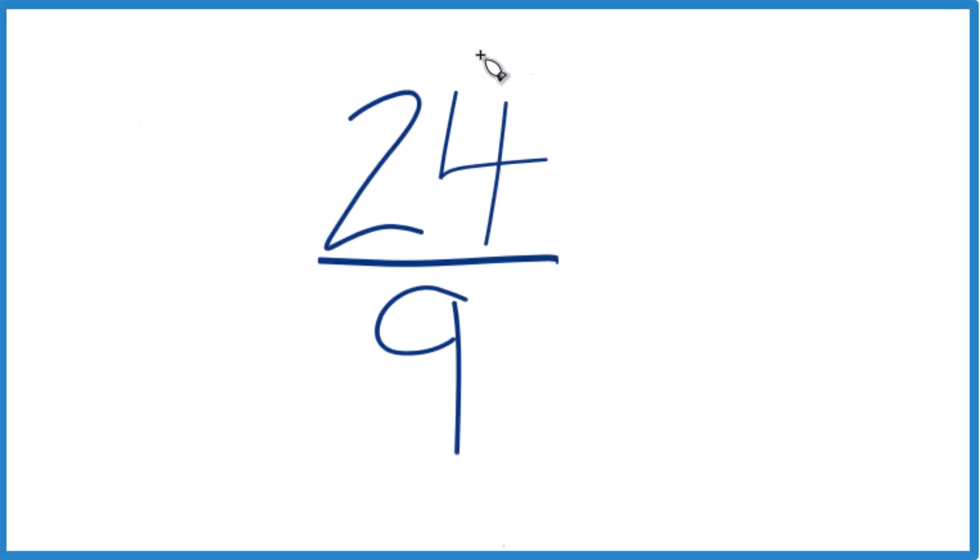Let's simplify the fraction 24 ninths. So what we want to do is reduce this down to lowest terms, its simplest form. To do that, we need to find a common factor that goes into both 24 and 9 evenly, and we're looking for the greatest common factor.